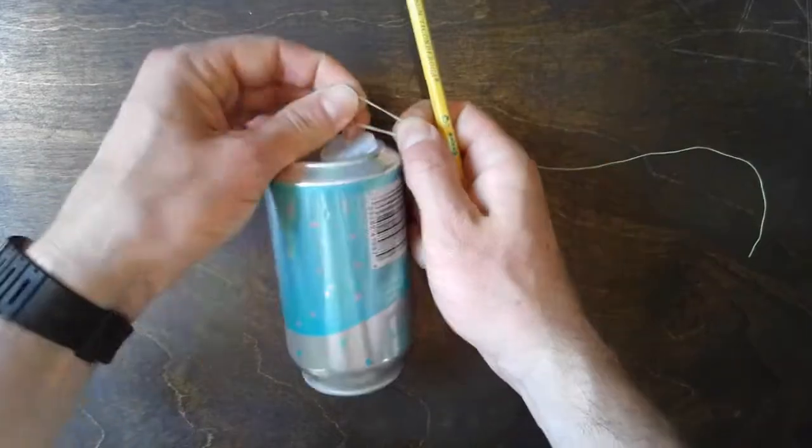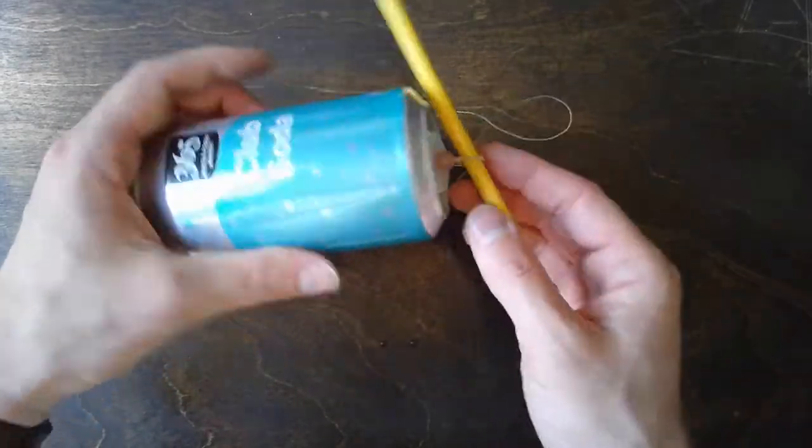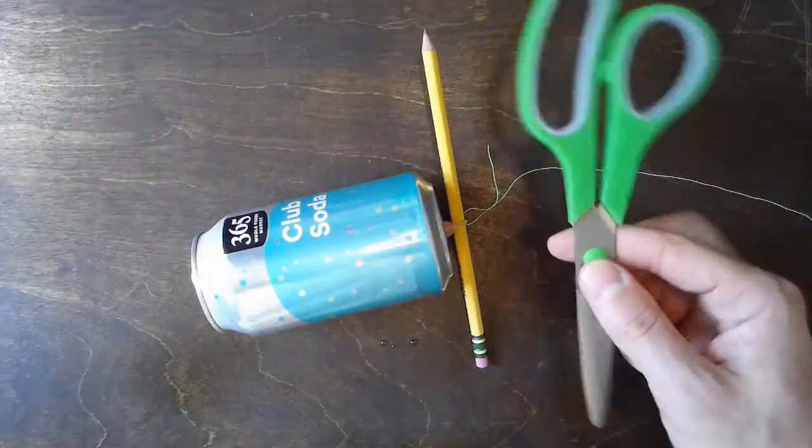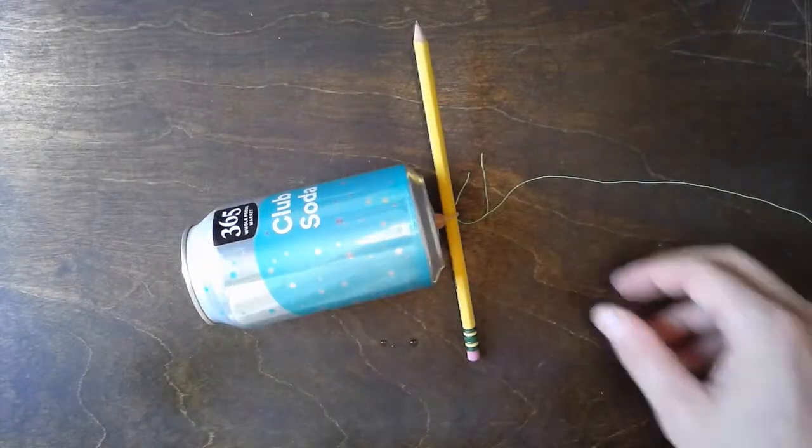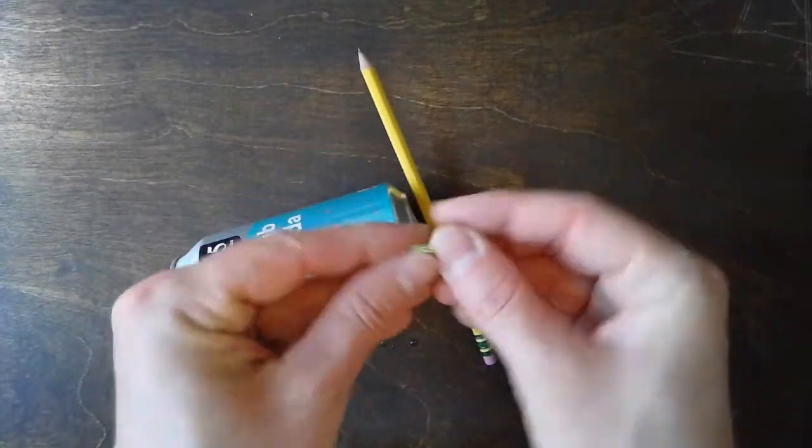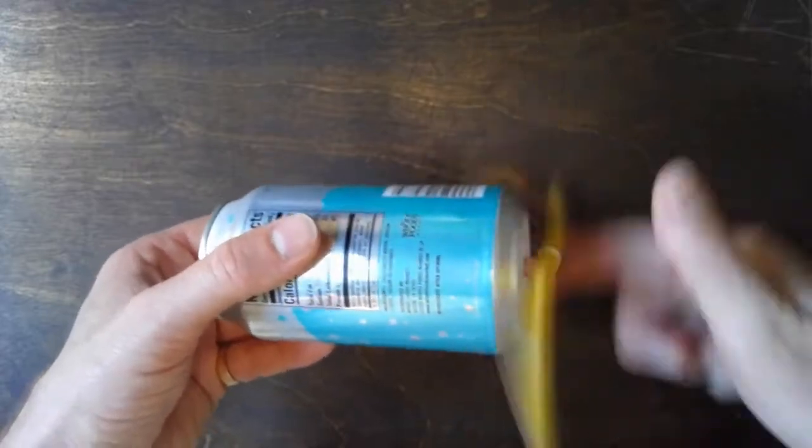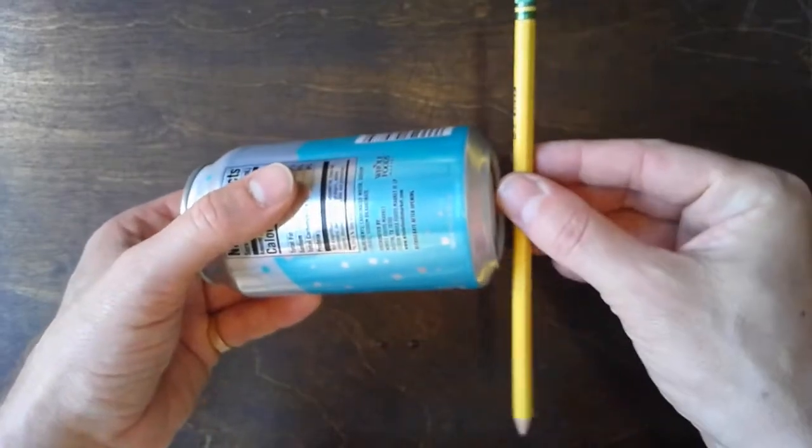Grab your pencil and put that through the rubber band, and that'll hold everything in place. Take your scissors—you don't need that string anymore—you can go ahead and toss that. When you wind it up and hold the pencil...